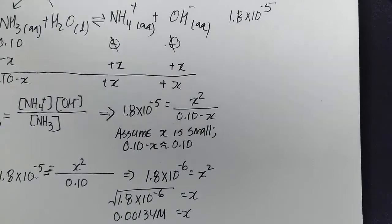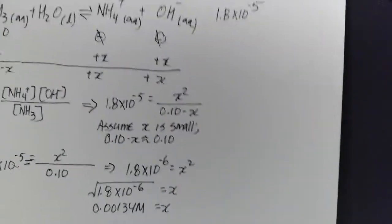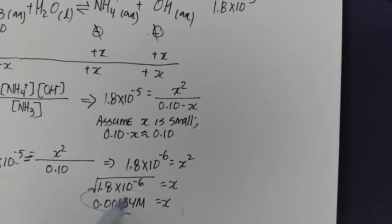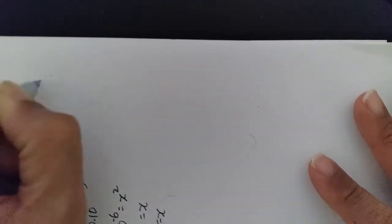Now we have everything we need to solve for pOH, and then from there we'll solve for pH. Our x goes here, which is our concentration of OH-. So our pOH is minus the log of the OH concentration.